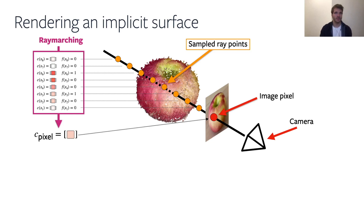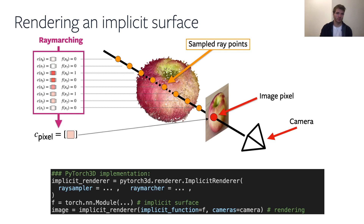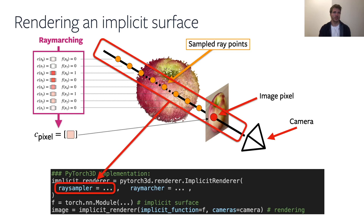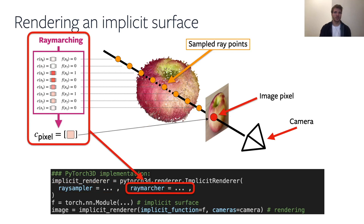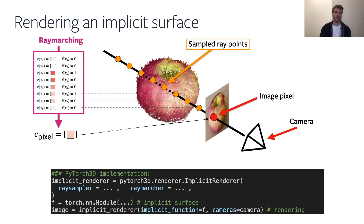In PyTorch3D we implement this whole process as follows. We instantiate the implicit renderer object by calling the constructor of PyTorch3D.renderer.ImplicitRenderer. This renderer stores two sub-objects: the ray sampler, which takes care of emitting individual rays from the camera and deciding which points along the ray are sampled, and the ray marcher object, which decides on the algorithm used to convert individual colors and occupancies into the pixel color. We then define the implicit surface function, typically just a PyTorch model, so that it is differentiable and can store parameters — a typical use case for a torch module.